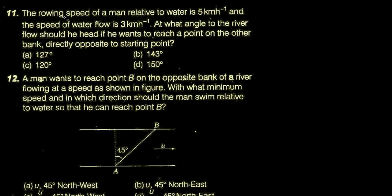The rowing speed of a man relative to water is 5 km/h (V), and the speed of water flow is 3 km/h (u). At what angle to the river flow should he head if he wants to reach the point on the other bank directly opposite to the starting point?